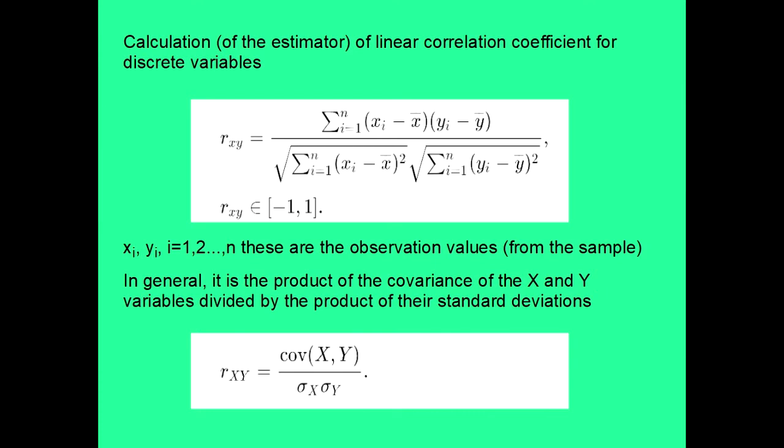Now, how do we calculate the estimator of linear correlation coefficient for discrete variables? Of course, we have some dependence in the population, but we can estimate it based on a sample. The formula is quite tricky. N denotes the number of observations. X dash, y dash, mean the means of the variable x in the sample, and y of variable y in the sample.